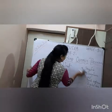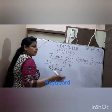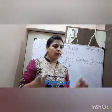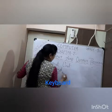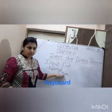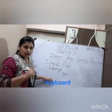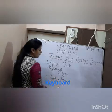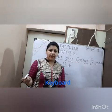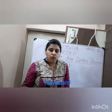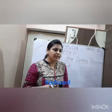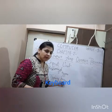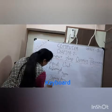A keyboard is a board full of keys. All the keys on a keyboard are divided into five types. The first type is typing keys, which include all alphabet and letter keys, backspace, punctuation marks, shift key, space bar, tab key, and special symbol keys.